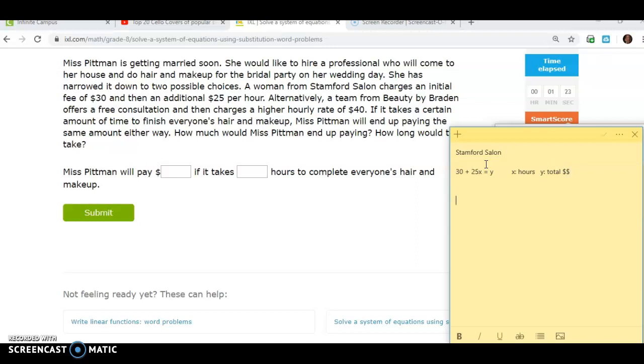And then we have another person from Beauty by Brayden. Now this salon offers a free consultation, so no fee or anything like that, but just charges an hourly rate of $40. So that means that their Y intercept is $0 and their hourly rate is $40. So there's an expression. And it's still the same because in systems, the X and the Y represent the same in both situations.